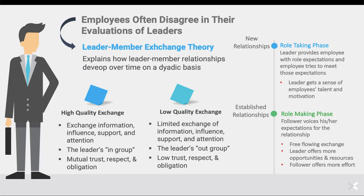In low-quality exchange, we see low trust, respect, and obligation. We know from our discussions that when trust is low, that's going to have an impact on how employees behave, and if we don't feel respected, that's going to influence employee behavior. So what LMX theory tells us is that some leaders have high-quality exchange relationships with employees — these individuals form the in-group — while some employees will have low-quality exchange relationships with the leader, forming the out-group, which will then have consequences for their behavior.